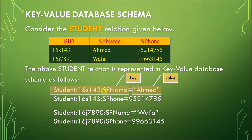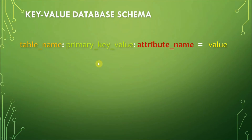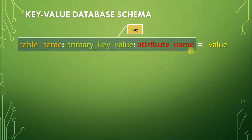The key is somewhat complex — it's not an ordinary key. Let's break down its parts. The first part of the key is the table name, followed by a colon, then the primary key value for that record, then another colon, and then the attribute name. This forms the key. After the key, you have an equal symbol followed by the value — key equals value.